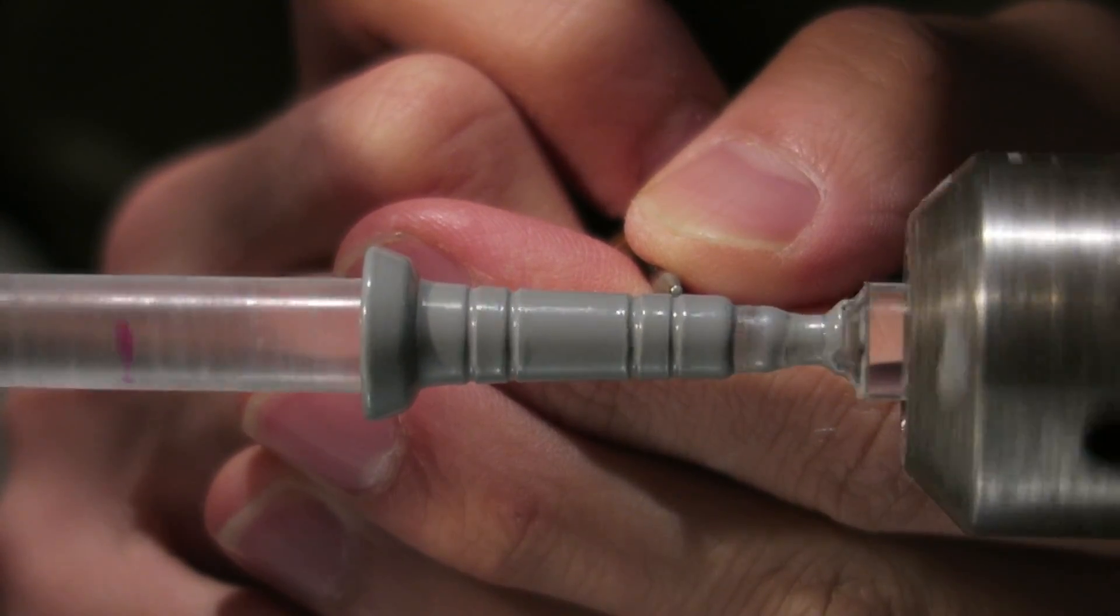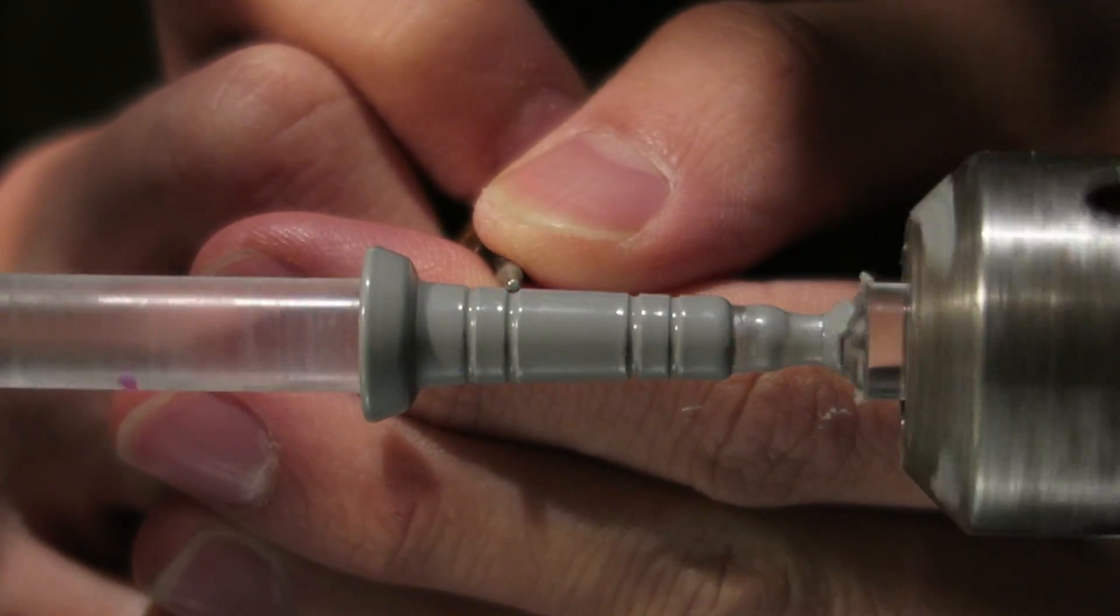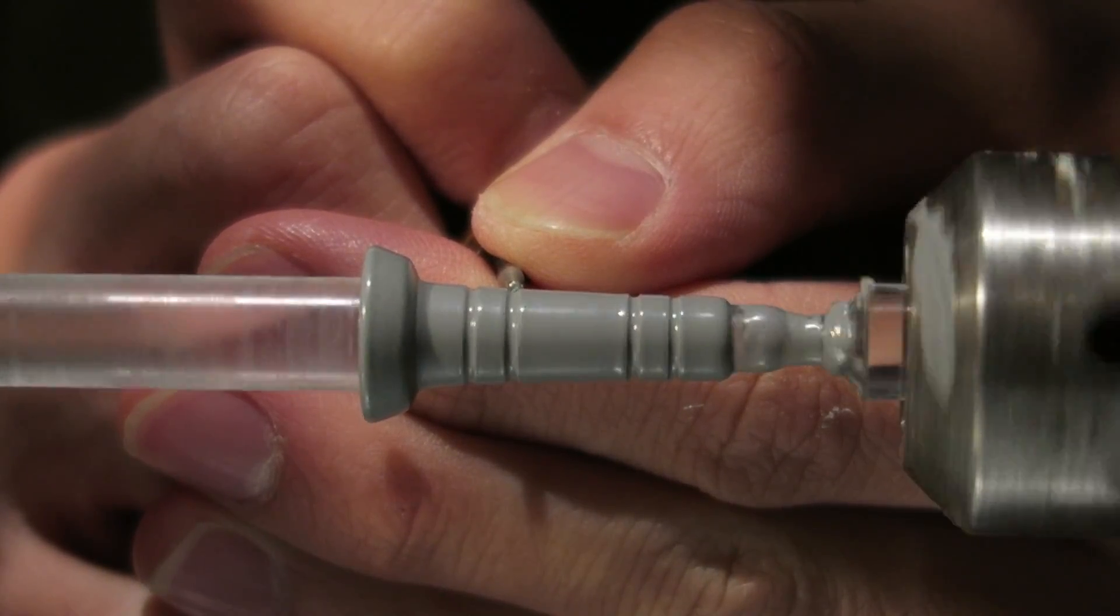Almost every part of my figure is made this way. I create the rough form on the lathe and then I go into the more precise detailed sculpting stage.